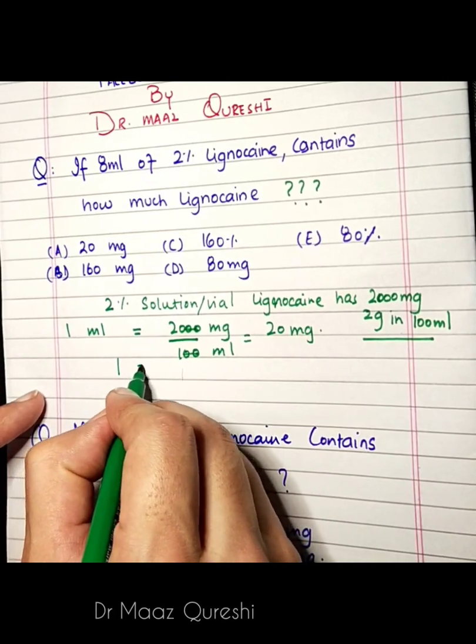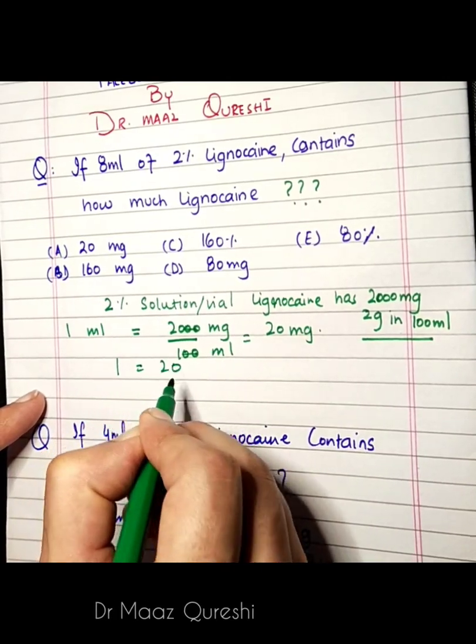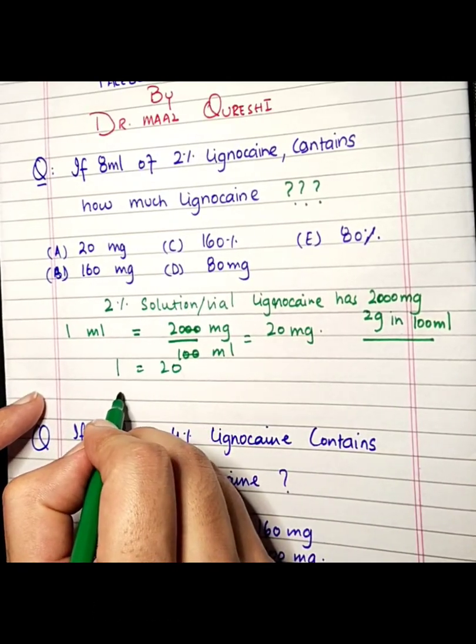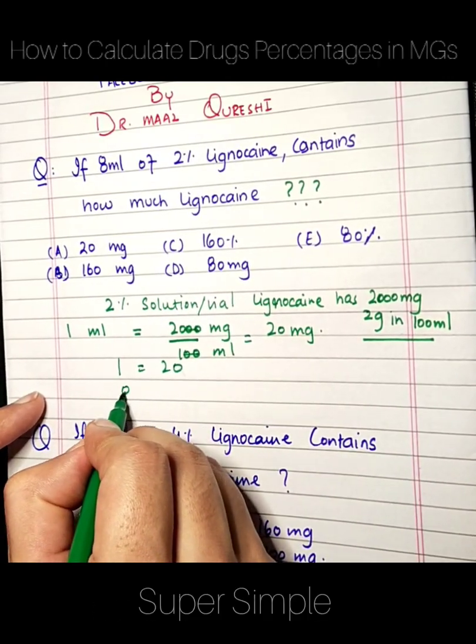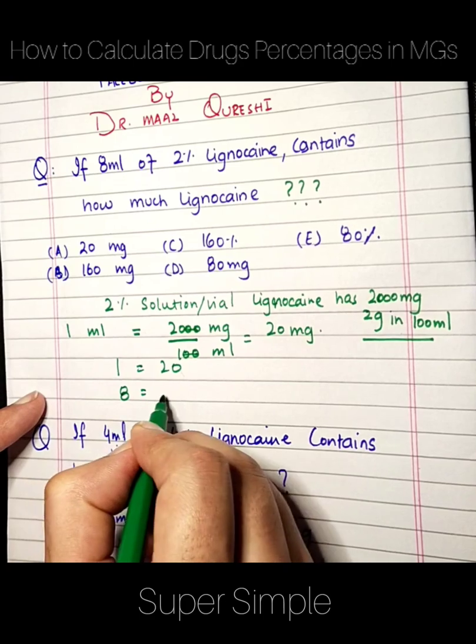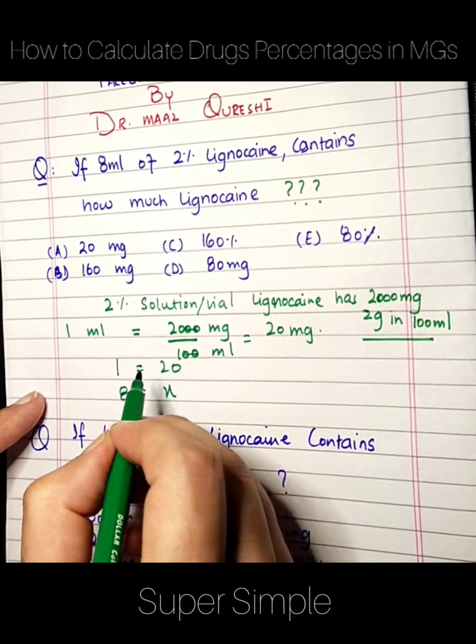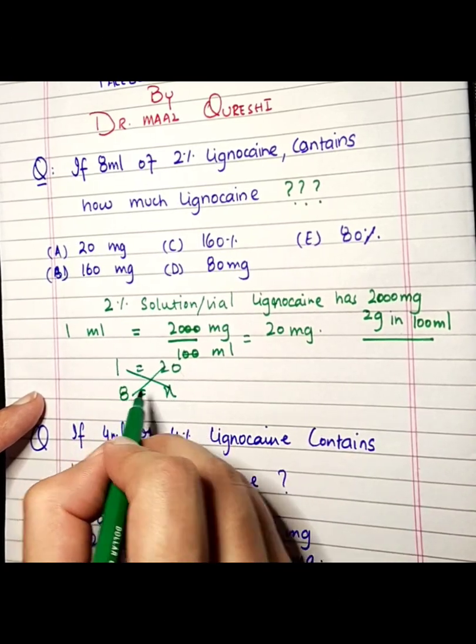If 1 contains 20, then 8 would contain x. So let's do cross multiplication.